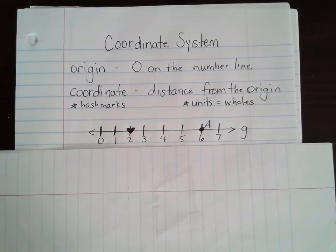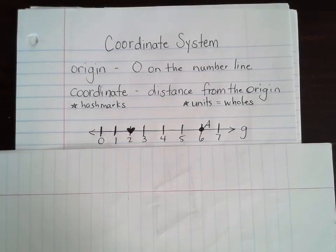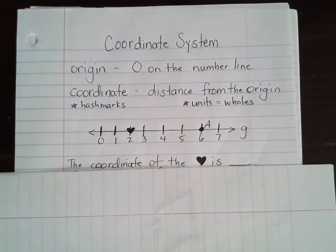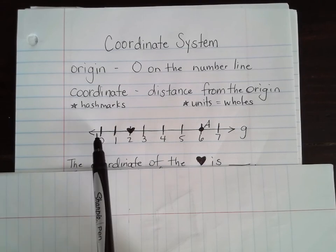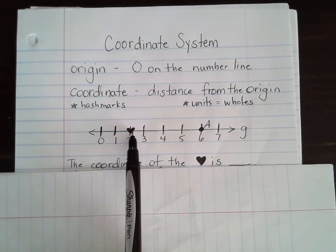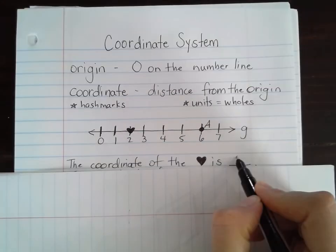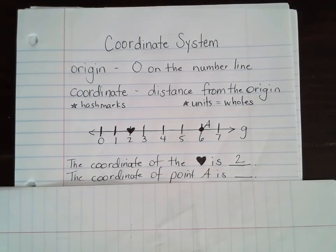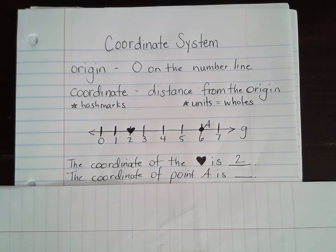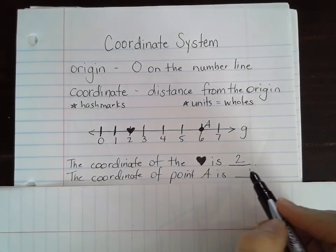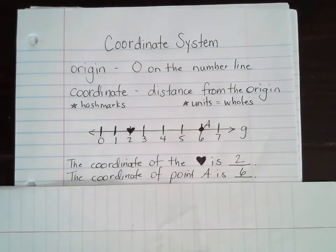Using these definitions, I could ask: the coordinate of the heart is what? What is the distance from the origin of the heart? And the answer is 2 — it's pretty obvious. I could also ask: what is the coordinate of point A? What is the distance from the origin of point A? And that would be 6.